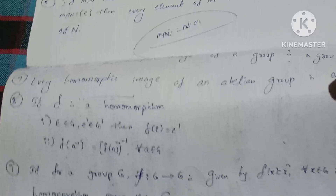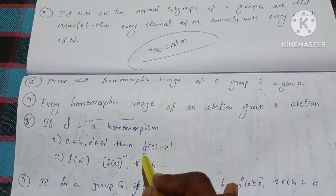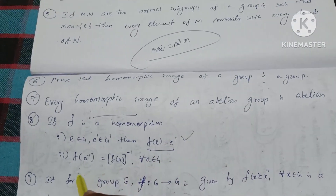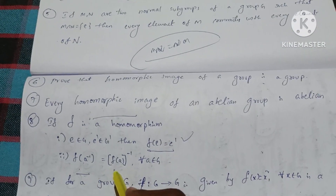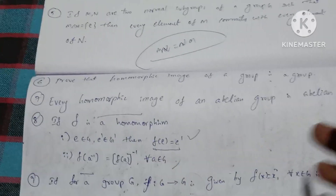Eighth question: Let F be a homomorphism. First condition: F of E is equal to E. Second condition: F of A inverse is equal to F of A, the whole inverse.